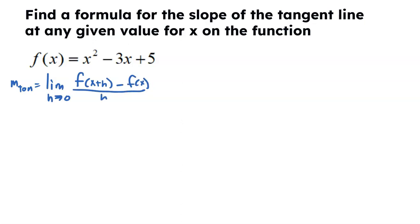Here is something I want to keep mentioning. You know you're done — you know you're good to go for direct substitution — when that H in the denominator cancels. Direct substitution is going to be plugging 0 in for H when you get that H to cancel. When that H in the denominator cancels, that's how you know you're good to go for direct substitution.